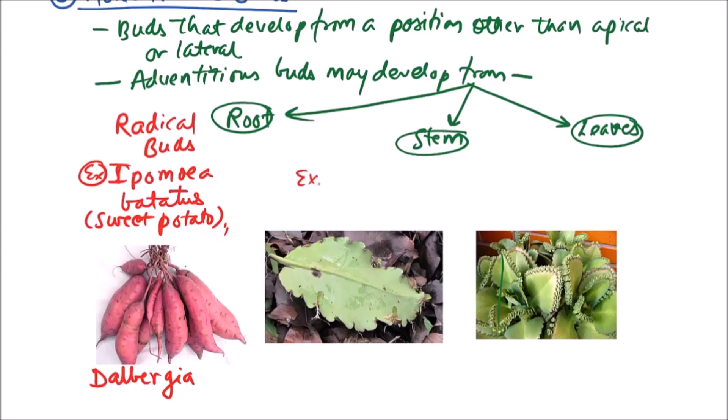The second type: if the buds develop from the stem, these are known as cauline buds, and such buds are found in rose. And if the buds develop from leaves, these are known as foliar buds.